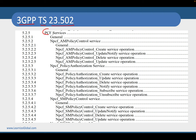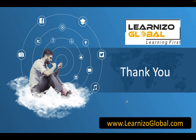Some of the key PCF services include AM policy control, policy authorization, and SM policy control. The consumer of the AM policy control service is AMF, and the consumer of the SM policy control — session management policy control — service is SMF. That covers the basics of PCRF and PCF. If you like this video, please subscribe to our YouTube channel and share it with your friends and colleagues. Thank you and see you in the next video.